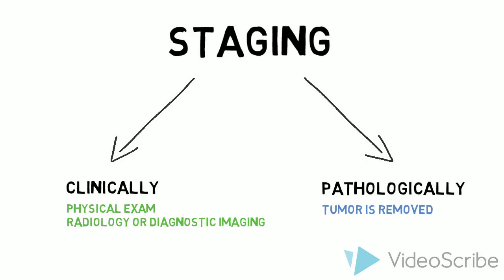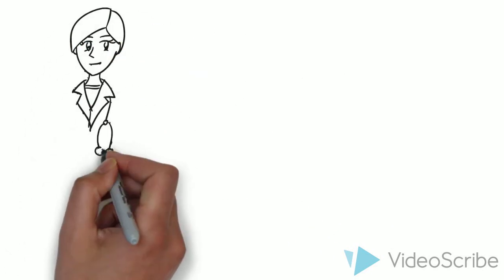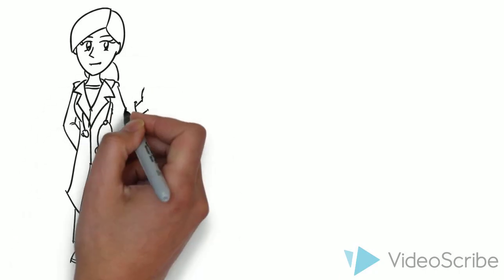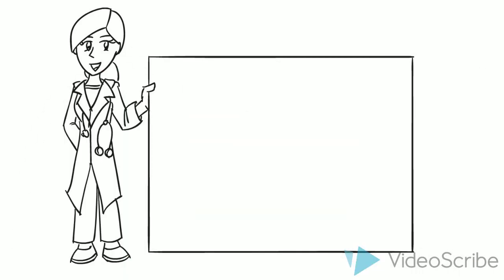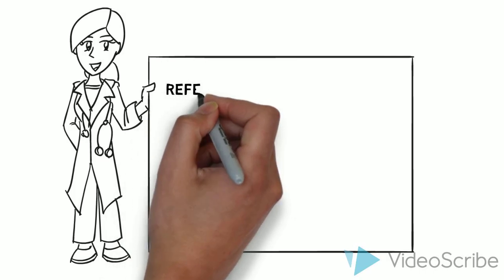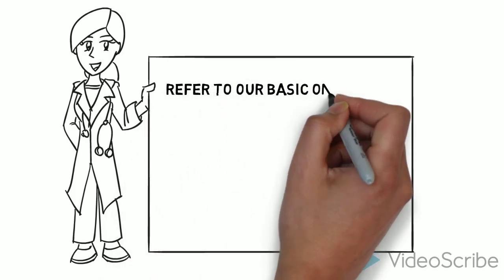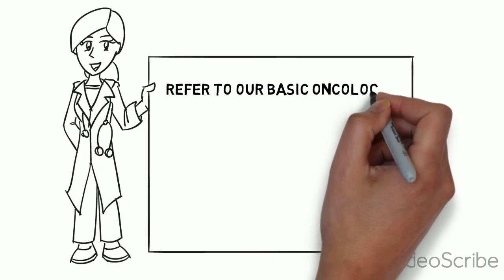This is obviously different from grade, as we spoke of before, which refers to the cells and their degree of differentiation and dysplasia as seen by a pathologist, usually microscopically. This concludes our discussion on the important principles regarding the staging and grading of cancers. For further information you can refer to the basic oncology principles module and our video podcast about the different modalities of treatment on learnoncology.ca.